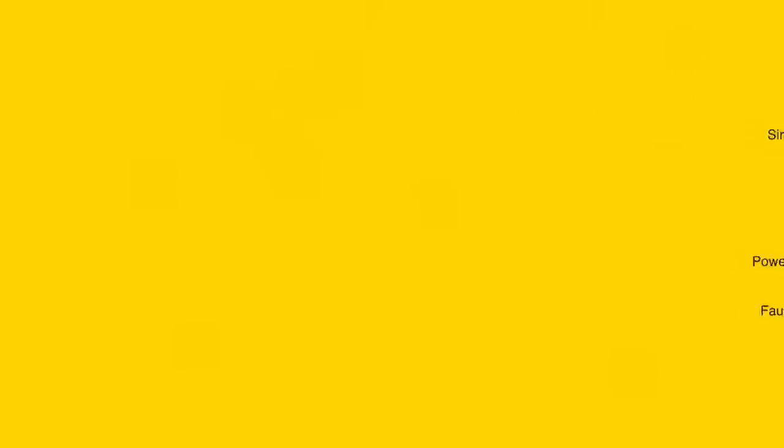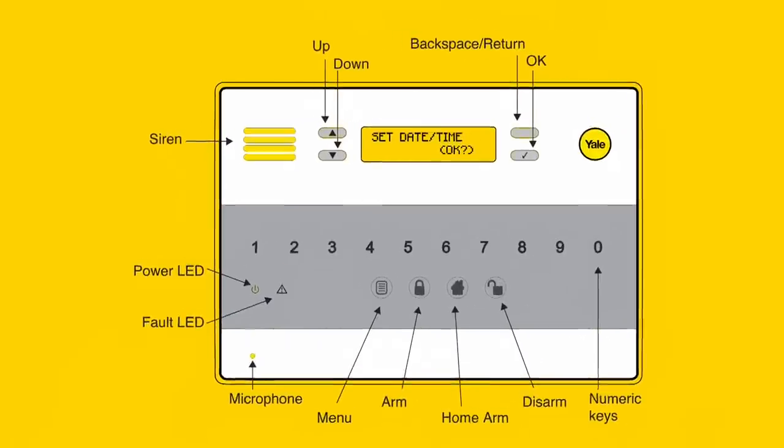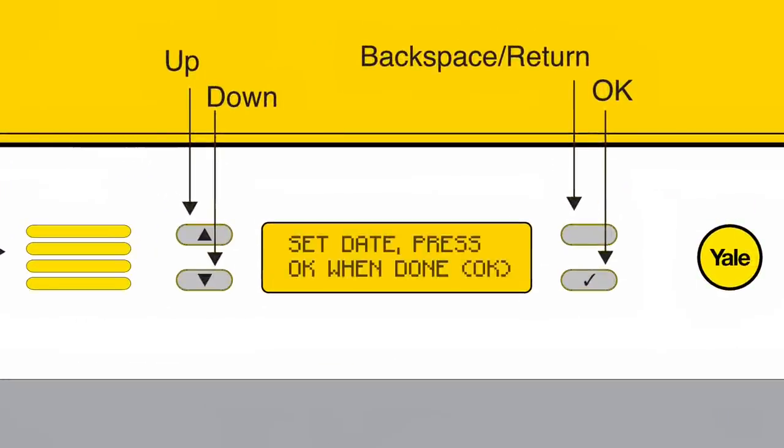You are now prompted to set the date and time. Set the current month using the up and down buttons. Press the tick button to confirm the required month. Set the current day by following the same process. Press the tick button to confirm. You will now be prompted to set the time. Set the current time using the up and down buttons. Press the tick button to confirm the hour and follow by setting the minutes.